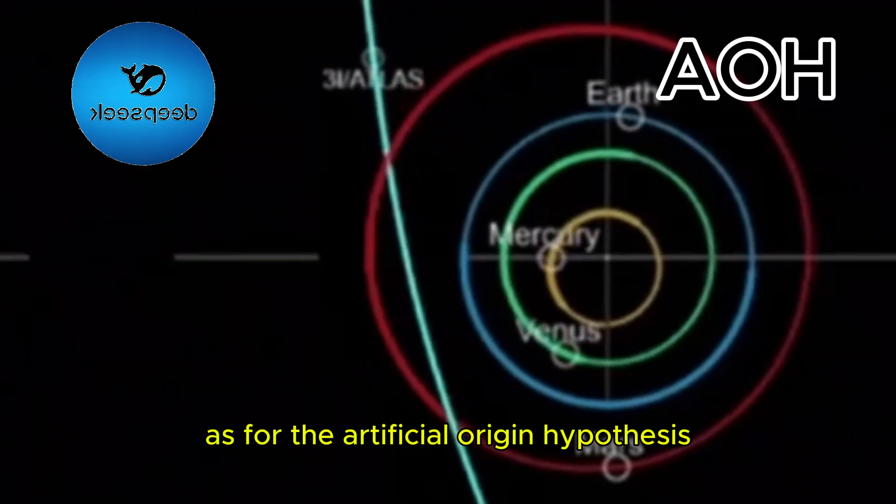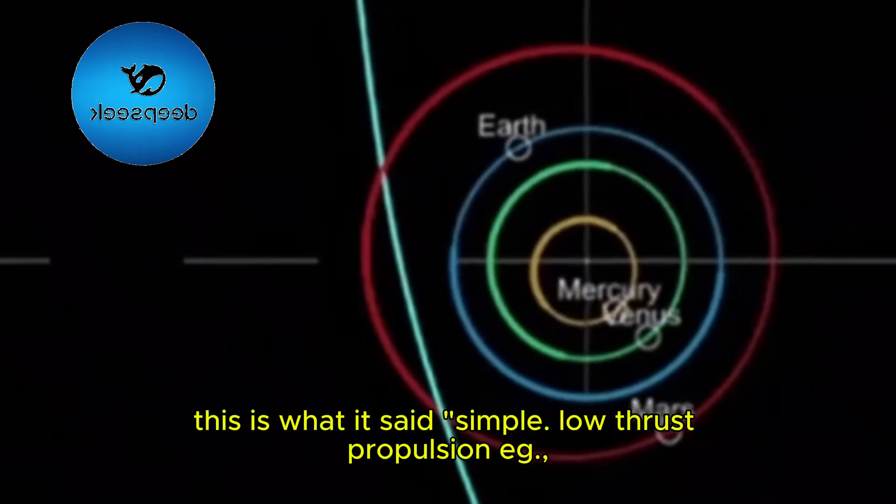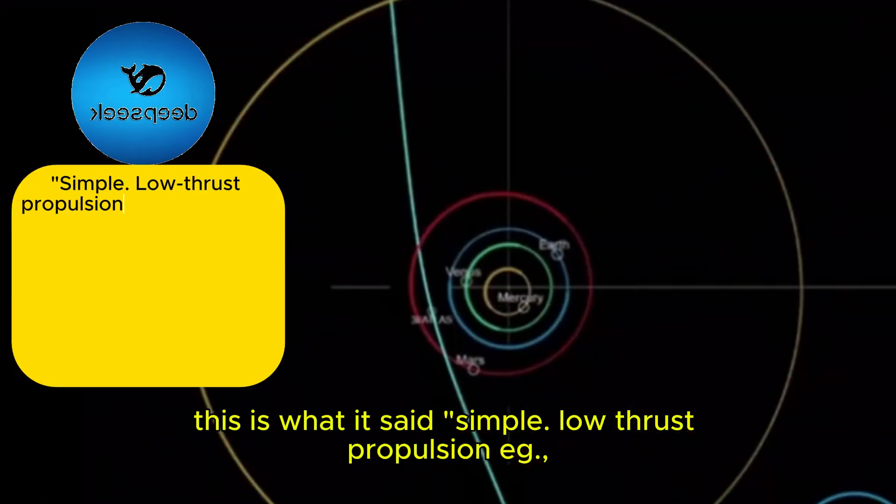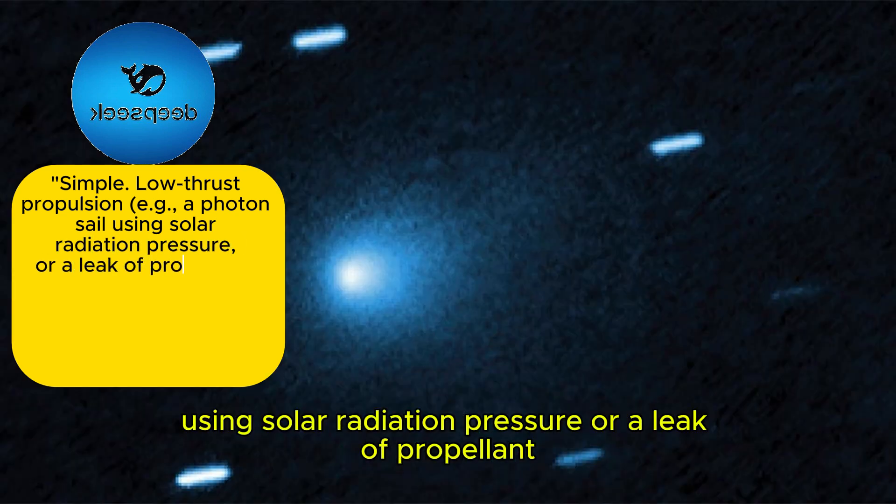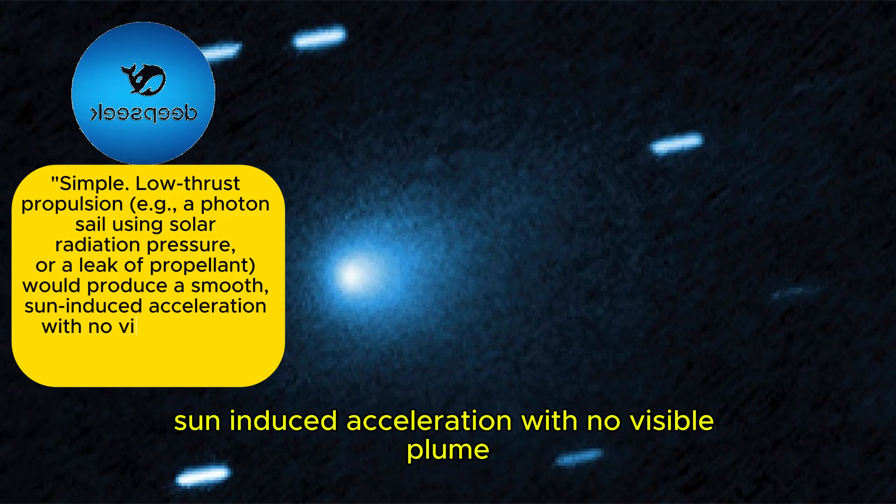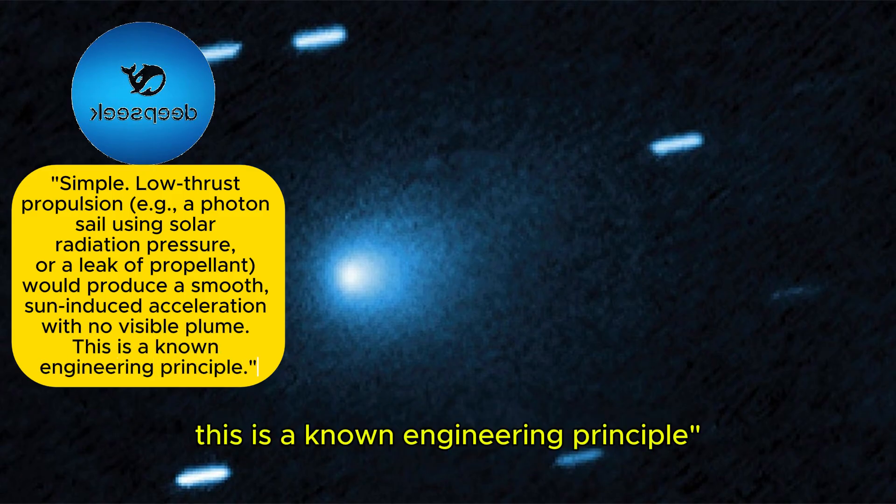As for the artificial origin hypothesis, this is what it said: simple. Low-thrust propulsion, e.g., a photon sail using solar radiation pressure, or a leak of propellant, would produce a smooth, sun-induced acceleration with no visible plume. This is a known engineering principle.